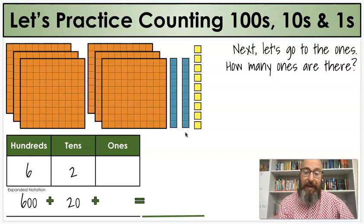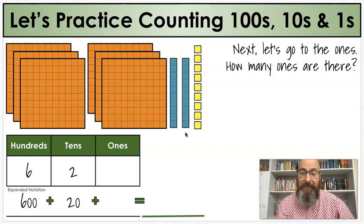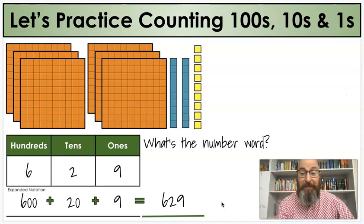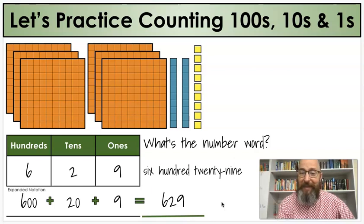Next, let's go to the ones. How many ones are there this time? Got a little bit more. Count carefully. Did you get nine? One, two, three, four, five, six, seven, eight, nine. So, how much are those ones worth? Nine. And if I put our expanded notation together down here, what's our number? Six hundred and twenty-nine. And what's the number word? Six hundred and twenty-nine. Exactly.